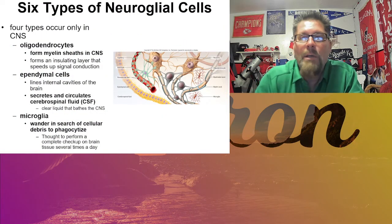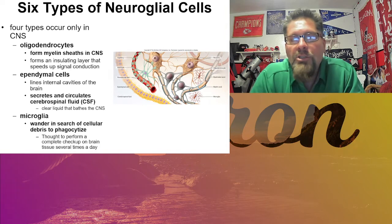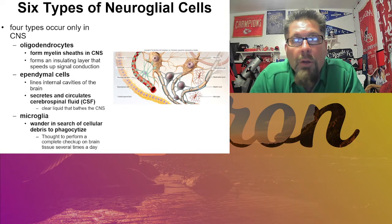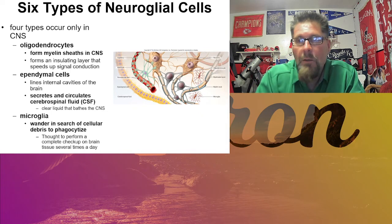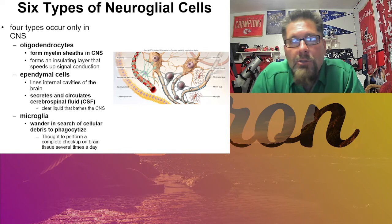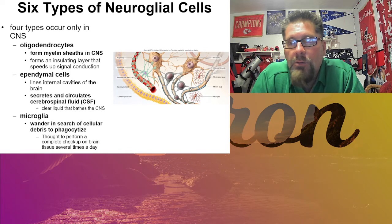There are six types of neuroglia cells. Four of them are only found in the CNS, and two are in the PNS. It'll be up to you to get those two groups memorized, along with their functions and everything that they do.